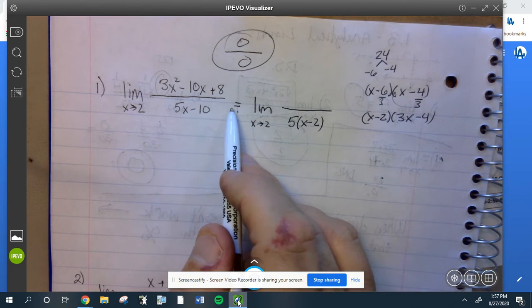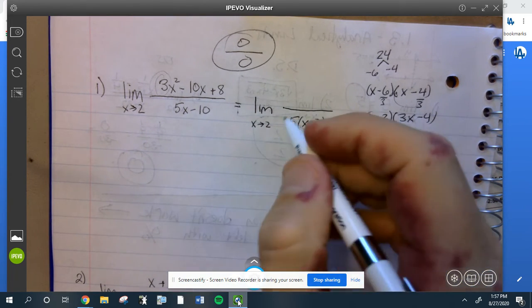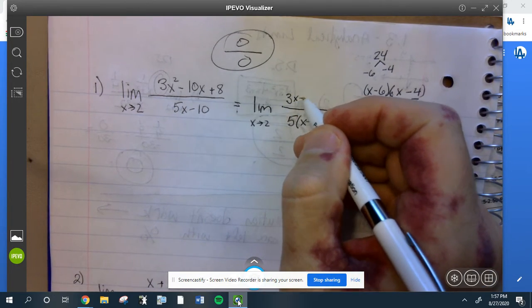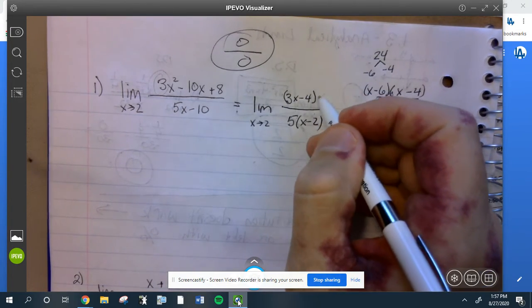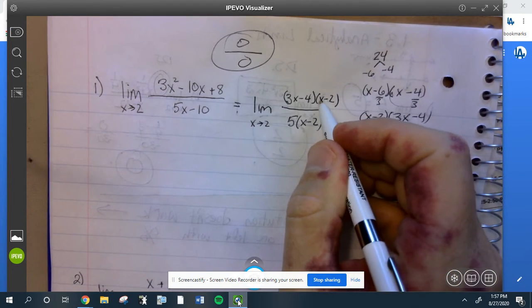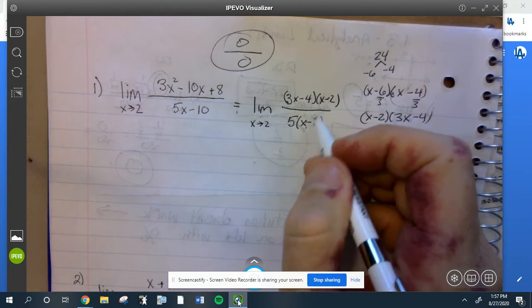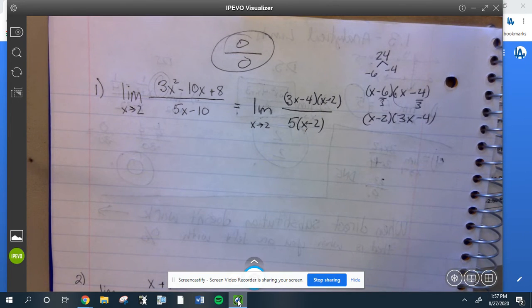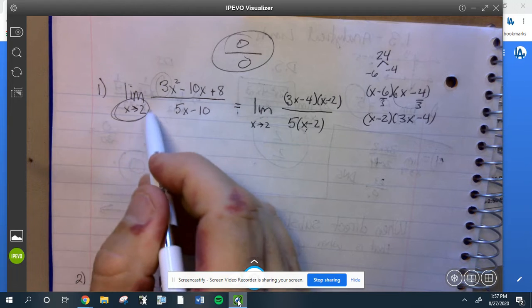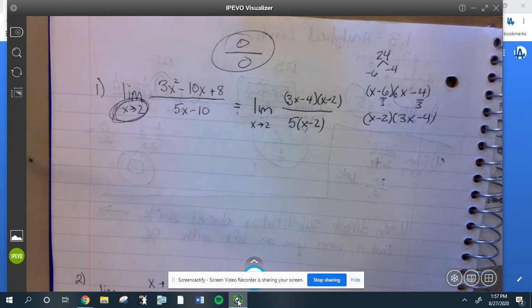Double check, FOIL this out, make sure you get 3x squared minus 10x plus 8, and I bet you will. I don't need to check though because notice this x minus 2 and this x minus 2, those are going to cancel. That has to happen.